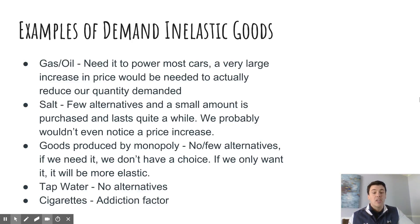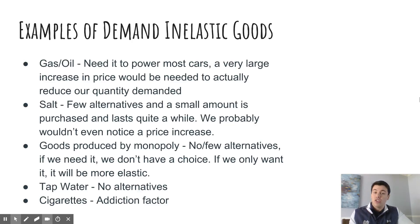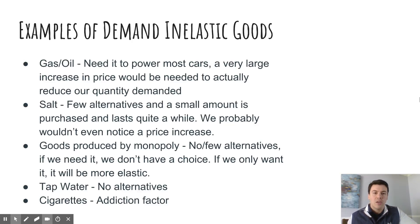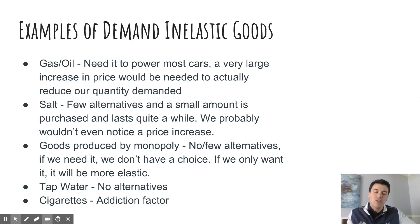Anything that's produced by a monopoly is going to have few alternatives or none. So if that's the case and we need it, we don't really have a choice — we're going to have to make the purchase if it is a need. If it's a want, we can choose to forego it, which might create a more elastic situation. Tap water is another example — there are no real alternatives. Doing something like showering with bottled water is not really a viable option, as that's going to be more expensive than using tap water. So if your city were to hike the prices on water, you really wouldn't have much of an option but to pay it unless you had a viable alternative. So tap water is a good example of an inelastic good.